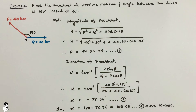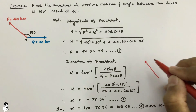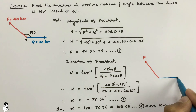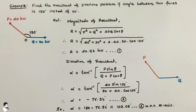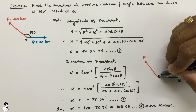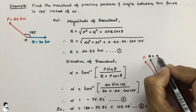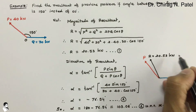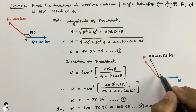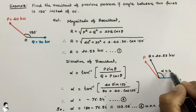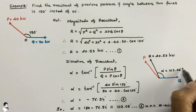This is the magnitude of the resultant and this is the angular direction of the resultant made with respect to the x-axis. It is also required to represent this graphically. Drawing force P and force Q acting at 150 degrees, we draw the resultant R with a magnitude of 20.53 kN, and with respect to force Q the value of alpha is equal to 103.06 degrees.